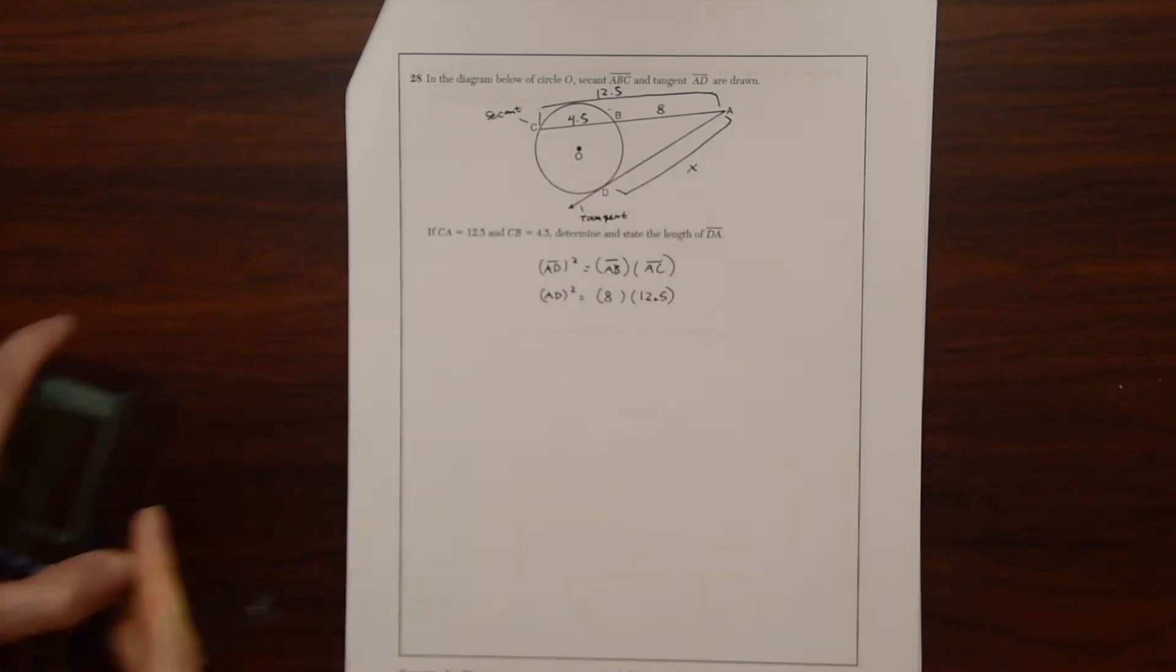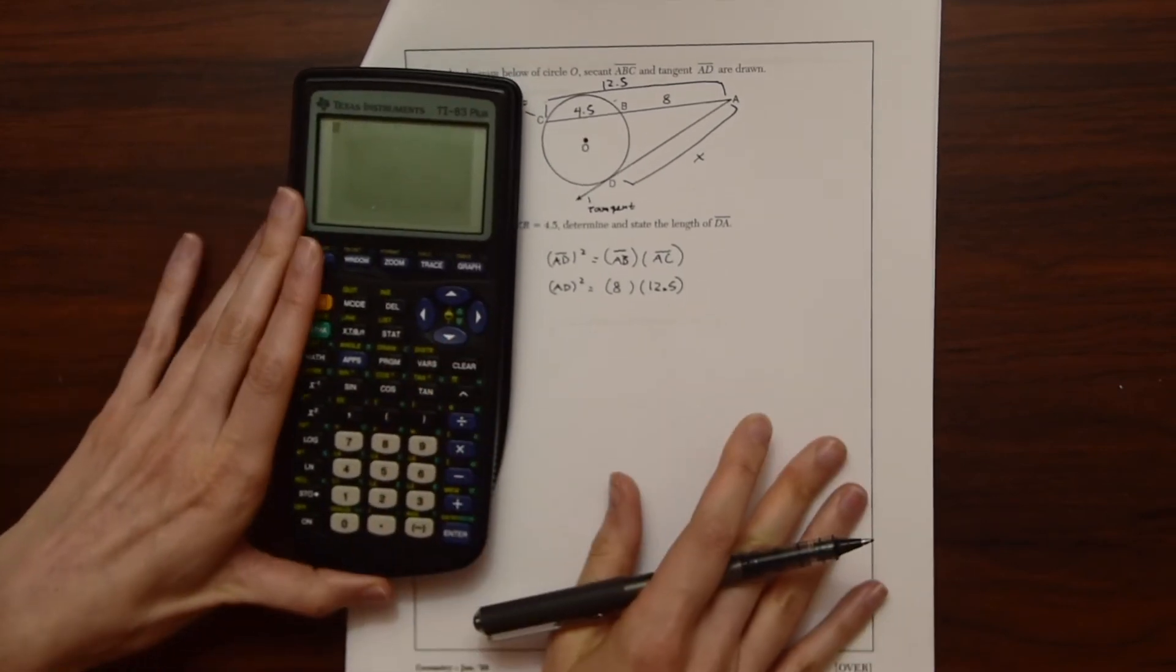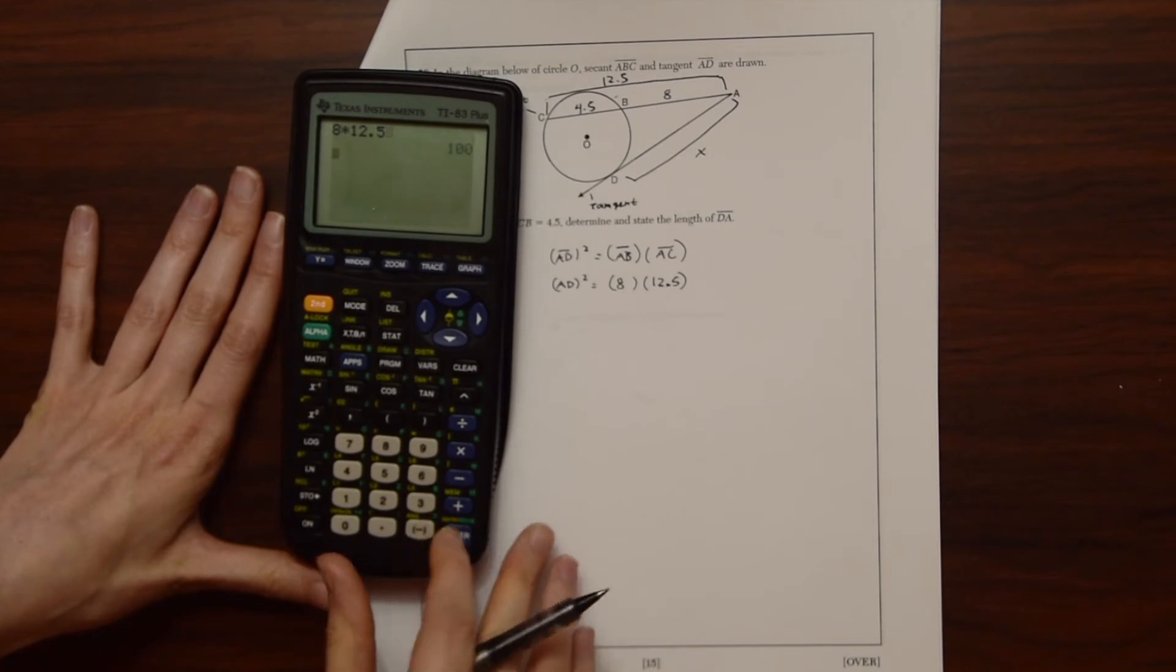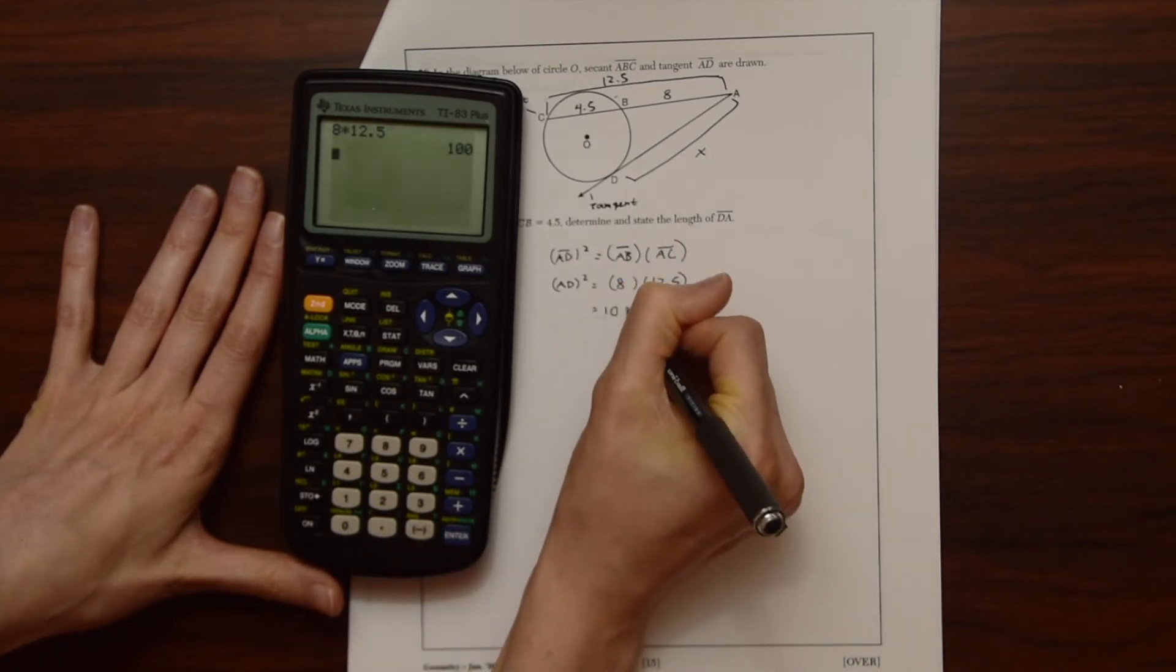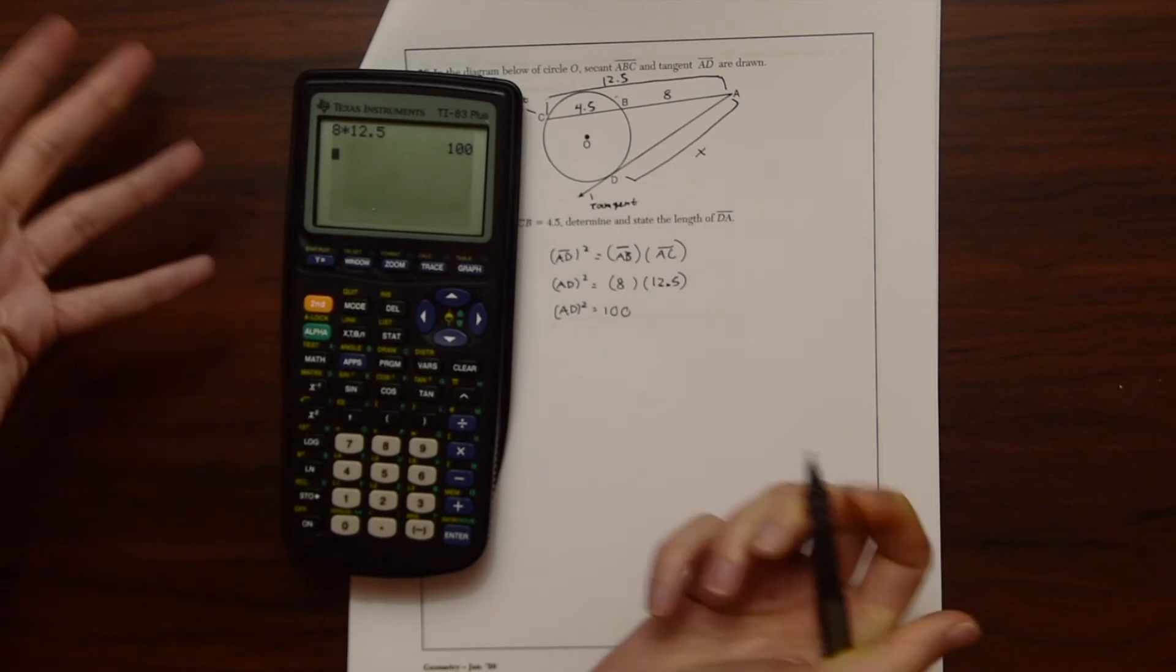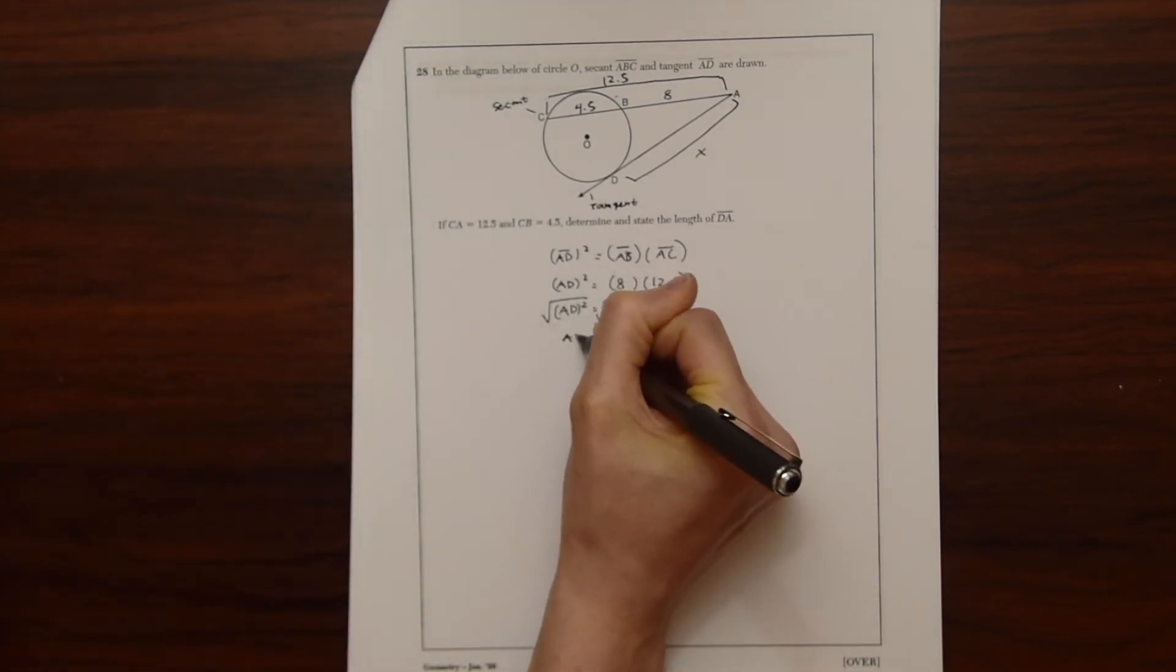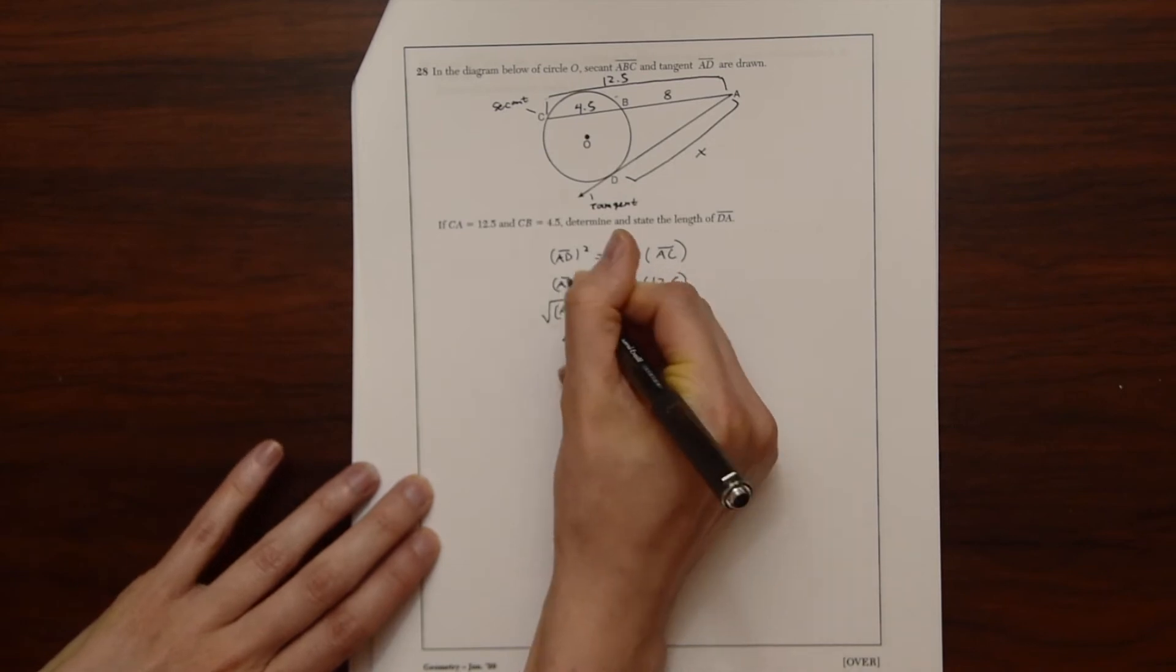So now we're just doing a little algebra, really, from here, as long as we know this property. So we can do 8 times 12.5 is equal to 100. This is AD squared. And now we can just take the square root of both sides. And we can see that AD is equal to 10, which is our answer.